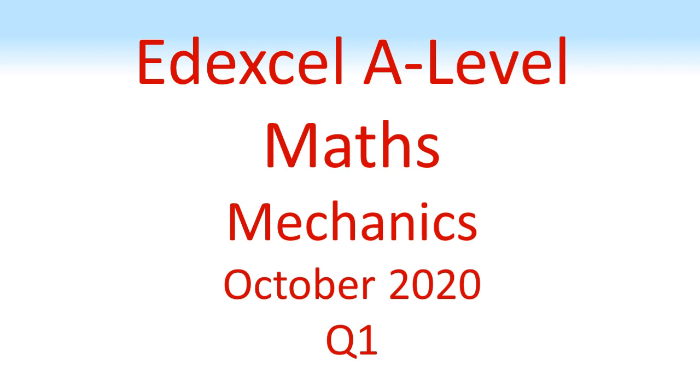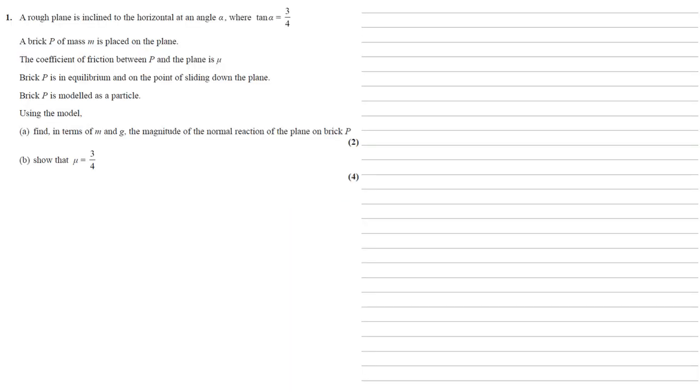Edexcel A Level Maths, Mechanics, October 2020, Question 1. A rough plane is inclined to the horizontal at an angle alpha where tan alpha equals three quarters. A brick P of mass m is placed on the plane. The coefficient of friction between P and the plane is mu. Brick P is in equilibrium and on the point of sliding down the plane. Brick P is modelled as a particle.